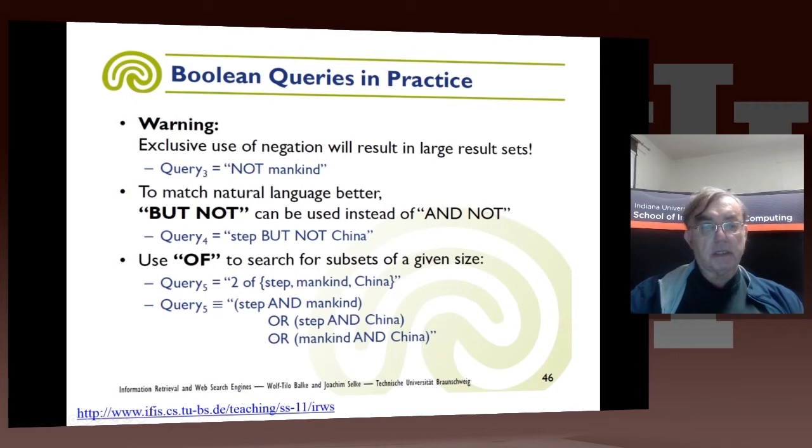This points out that NOTs are very dangerous, unless they're just making something more precise. So Step but not China is a perfectly reasonable thing to say. But not China or not Mankind is not such a terribly useful concept, because it gives you too many results.